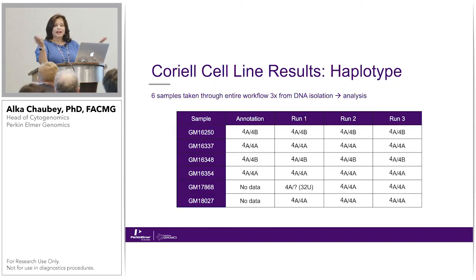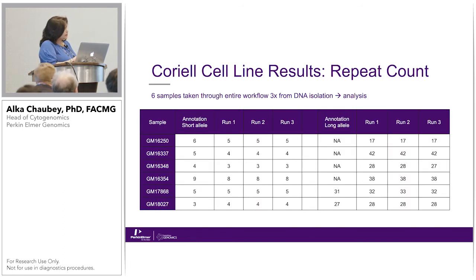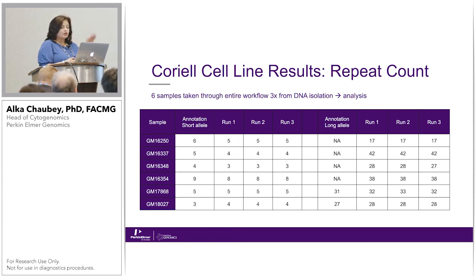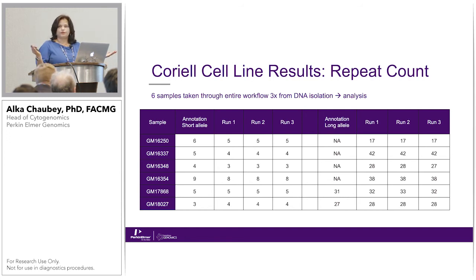We used the six Coriell cell lines and did three runs on these six samples. The repeat contractions matched plus or minus one contraction — not only the contracted allele but also the other long allele. Because these are single molecules being mapped, you can see the long molecules as well. Everything matched perfectly.